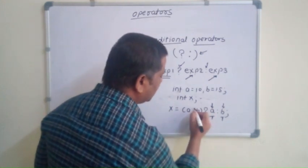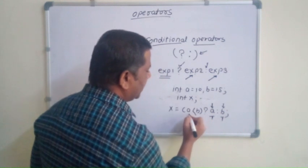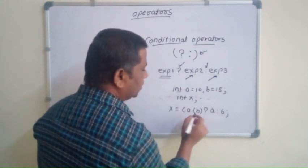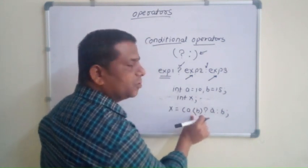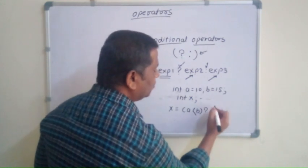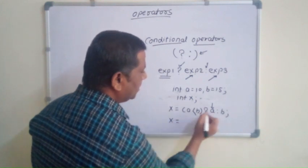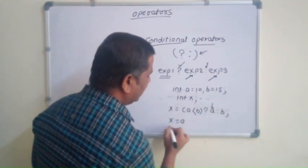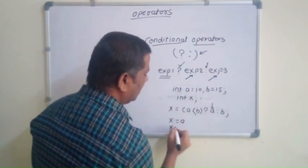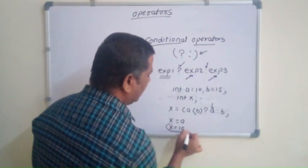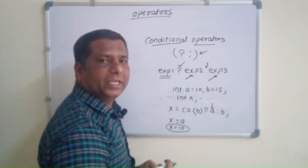So aise check hoorti hai condition. Suppose, humain expression mein kuts aise change kiya, a is less than b. So yaha peh, yhe condition true hooghi hai. So that's why it will execute this expression. Now, what is the value of x? Value of x is a. That is, a ki value kithne hai, 10. So yaha peh, x ki value 10 hooghi.